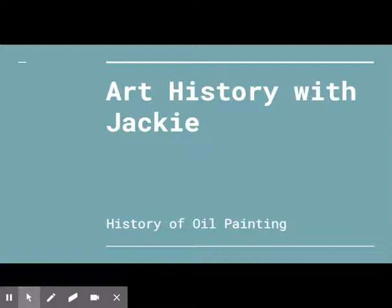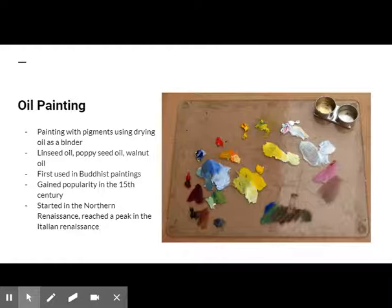Oil painting is the process of painting with pigments and using drying oil as a binder. Commonly used drying oils include linseed oil, poppy seed oil, walnut oil, and safflower oil. Recent advances in chemistry have produced water-miscible oil paints.